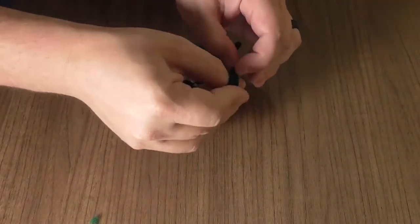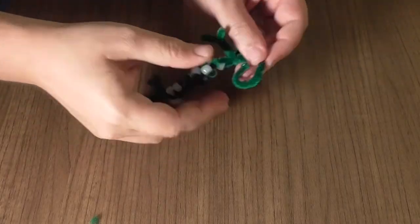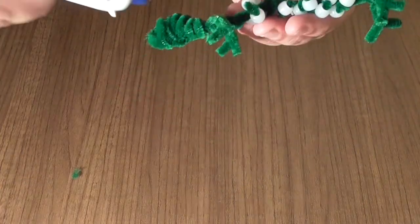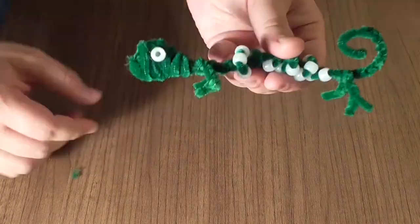Curl the chameleon's tail with whatever pipe cleaner is left. Hot glue your remaining two beads onto the eyes of your chameleon.